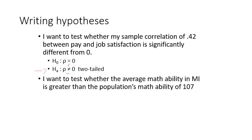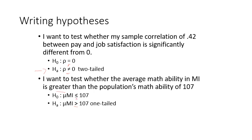What if we wanted to test whether the average math ability in Michigan is greater than the population's math ability? Is this directional or non-directional? This is directional because we're looking for greater than. The alternate is that the mean math ability in Michigan is greater than 107 — it is one-tailed and directional. Then the null is the opposite: that the math ability is less than or equal to 107.